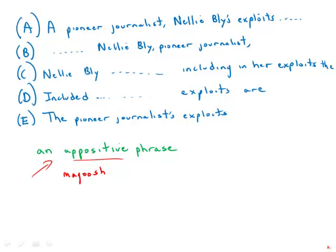The problem with A is that the two nouns being contrasted in the appositive are pioneer journalist, and then the noun is exploits. Nellie Bly is possessive, modifying exploits. And so we're really saying that the exploits are a pioneer journalist, which is not what we mean to say. So answer choice A is out.